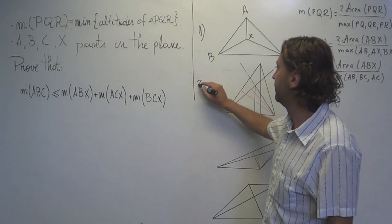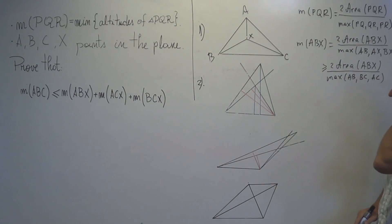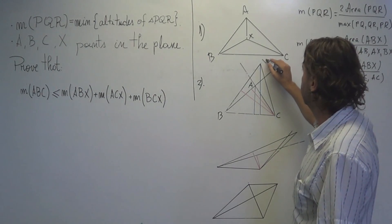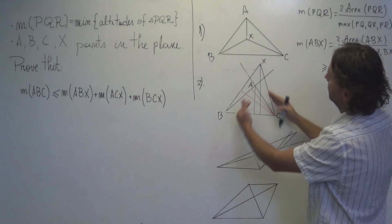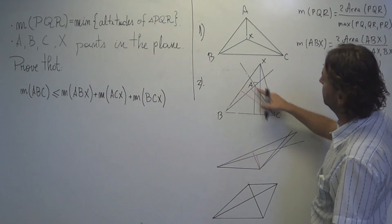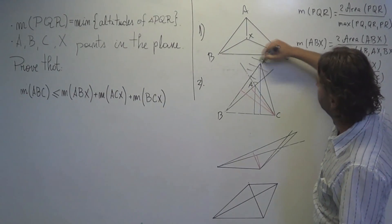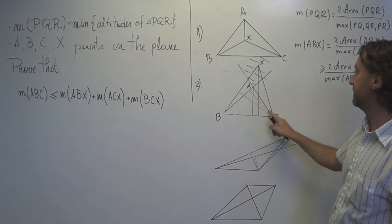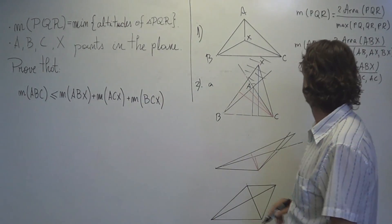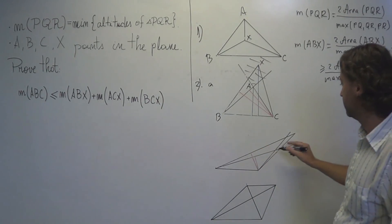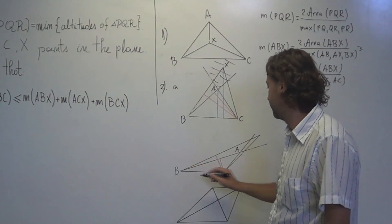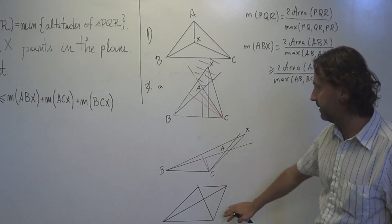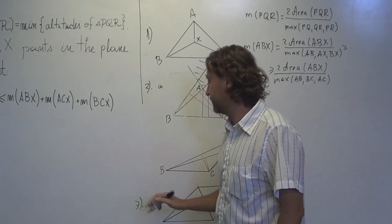Now we have to consider two other cases. The first one is when X is outside. So here is ABC and here is X. So X is outside, but is inside the opposite of the angle BAC. It's inside this. And here we have two subcases. We have the case when the angles B and C are smaller than 90 degrees. This will be case 2A. In our case here, the angle C is bigger than 90 degrees, and this will be the third case.